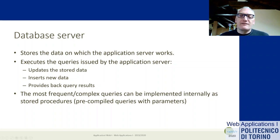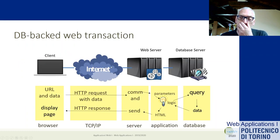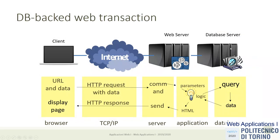The role of the database server is to store the data and allow the application server to update, query, and create new information in the database. From the architecture point of view we are adding a new layer on the right of the picture: we had the web server, the application server, and now a database server. They are drawn separately because most likely they will be separate hardware with very different hardware requirements — the web server is mostly about bandwidth and I/O performance, while the database server is also about memory and disk capacity.